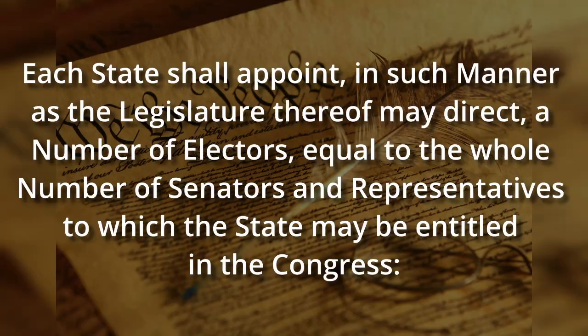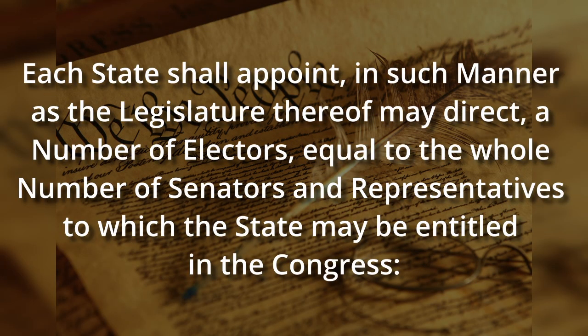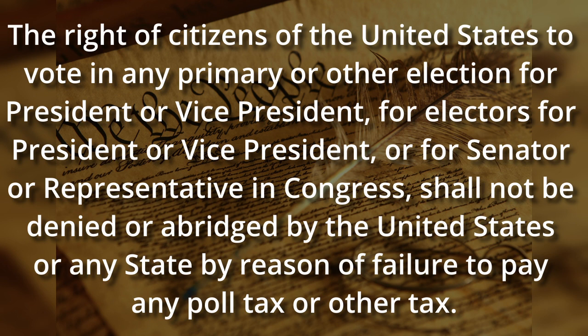They do not. According to Article 2, Section 1, Clause 2 of the Constitution, each state shall appoint in such manner as the legislature thereof may direct a number of electors equal to the whole number of senators and representatives to which the state may be entitled in the Congress. Like primaries, before 1964 and the ratification of the 24th Amendment, the idea of the people voting for president did not exist in the Constitution. The 24th Amendment didn't say that the people voted for president, only that they could not be denied the right to vote in such an election for failing to pay taxes.